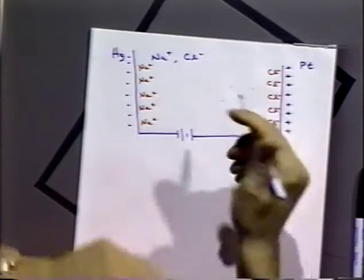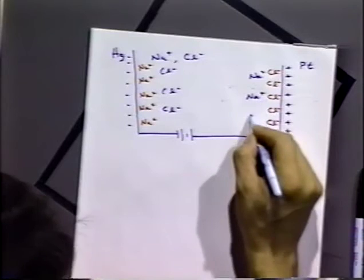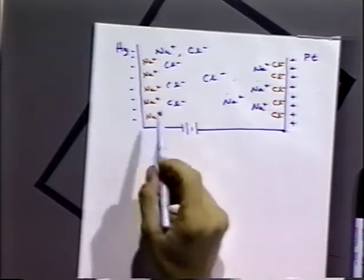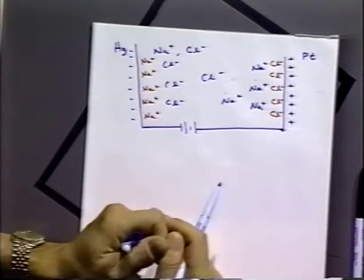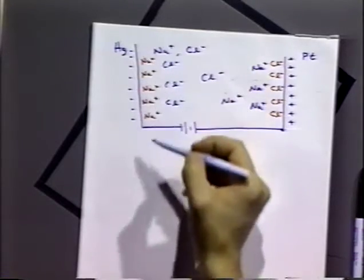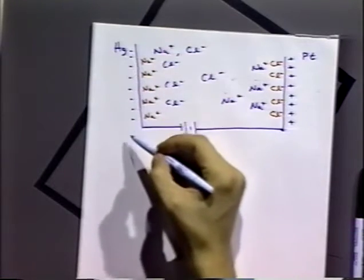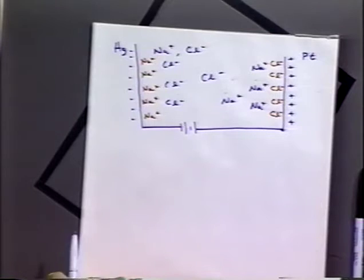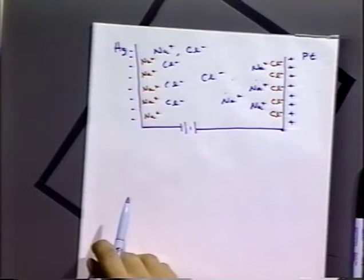Those sodium ions and chloride ions are attracted close to the electrode but are not having a faradaic reaction — there isn't enough energy to take an electron from the mercury and put it onto a sodium ion. They're just not as close to the electrode as others are. This shows the agreement between our physical system — the electrode in solution — and the capacitor model.